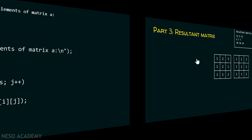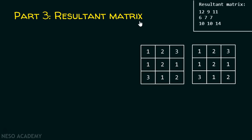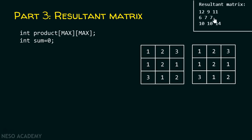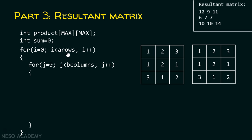Now let's see part number three, which is the most important part — to calculate the resultant matrix. For this purpose, first of all we require one array which will store the values of the resultant matrix. We also require one variable called sum, initialized to zero. Recall the multiplication process: to calculate the first element of the resultant matrix, we take the first row from the first matrix and the first column from the second matrix, requiring two for loops to track rows and columns.